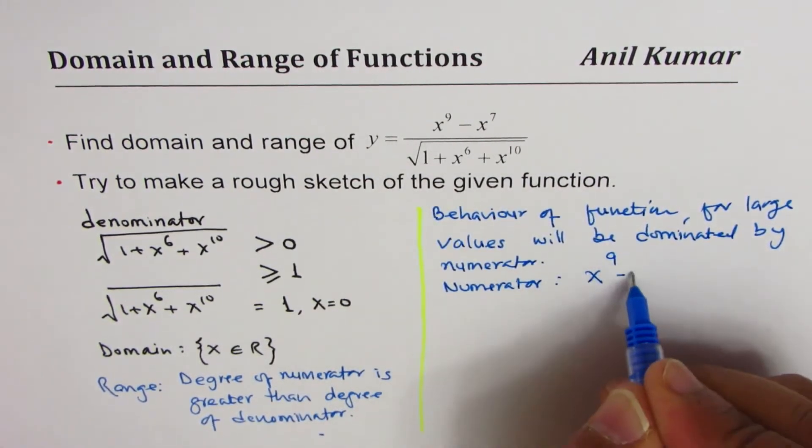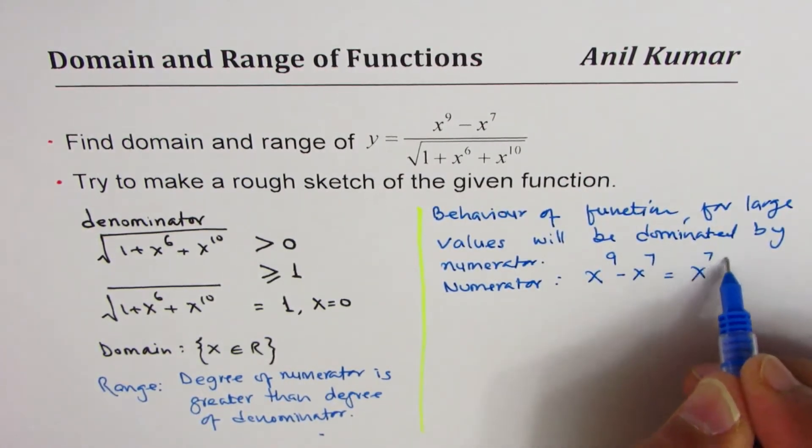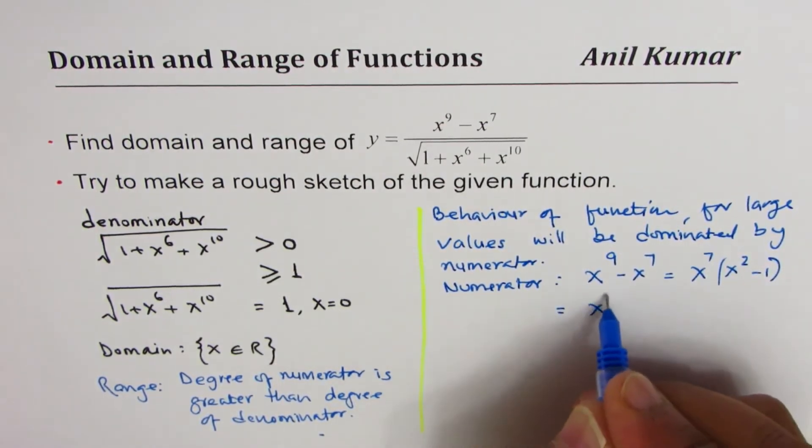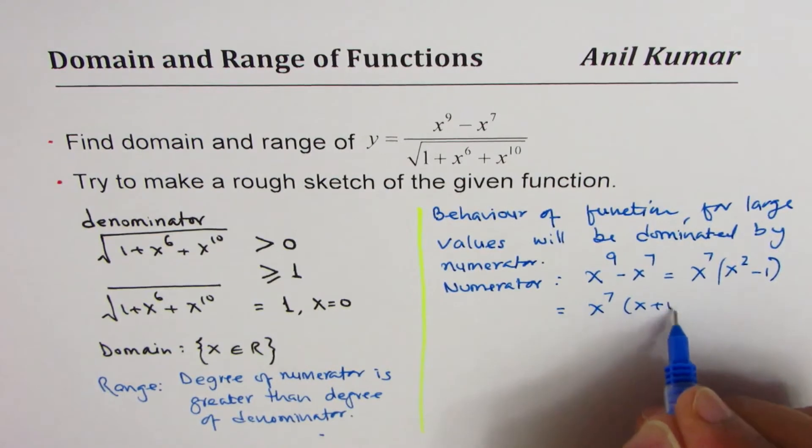Which you would write as x to the power of 7, and then you get x squared minus 1, and that is x to the power of 7 times x plus 1 times x minus 1. Do you see that?